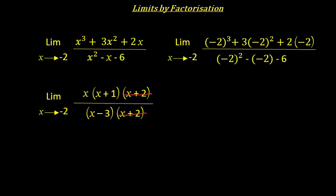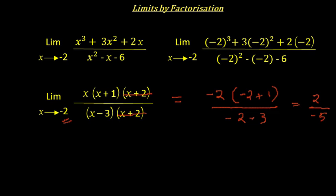We cancel out (x + 2) in the numerator and denominator. Now let us apply x = -2 in the remaining expression. The limit evaluates to (-2)(-2 + 1) divided by (-2 - 3), which is (-2)(-1) / (-5) = 2 / -5. So the limit is -2/5 as x tends to -2.